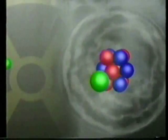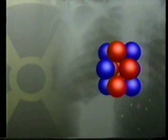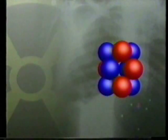Atoms of different elements have different atomic numbers. The atomic number is simply the number of protons. For carbon, it's six.